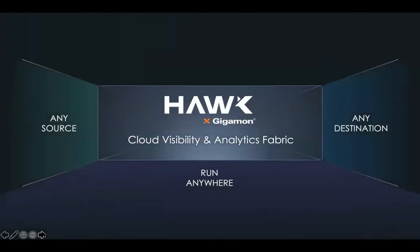The first hybrid cloud visibility and analytics fabric, Hawk takes information from any source — regardless of on-premises, virtualized, or in the cloud. It transforms and optimizes that information and then sends it on to any destination that needs to consume it.